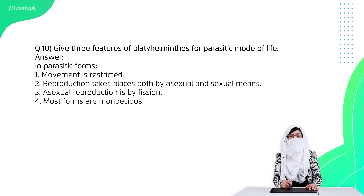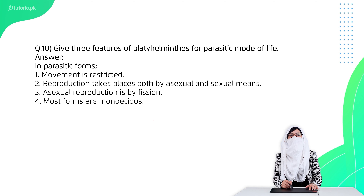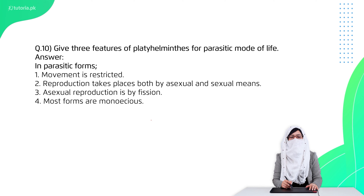Question 10 is: give three features of platyhelminthes for parasitic mode of life. First, they don't move — they stay in one place. Second, they are hermaphrodite, so a single individual can reproduce. Third, there is also asexual reproduction.